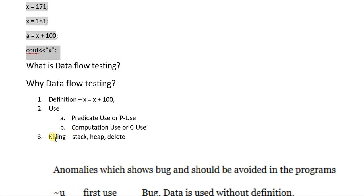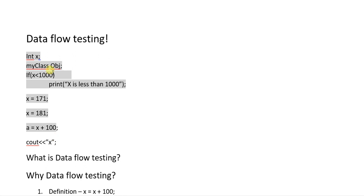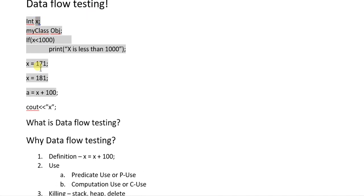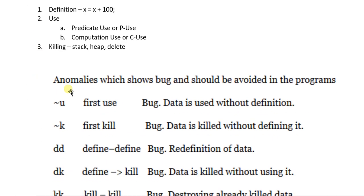The last term we use is killing. By killing we mean when we destroy a variable. The variable is destroyed automatically sometimes, and sometimes we do it manually. If we define the variable on the stack, like here where X is defined on the stack, it is automatically killed when we go out of the scope of that variable. If we define the variable on the heap, we have to delete it manually with the delete operator.